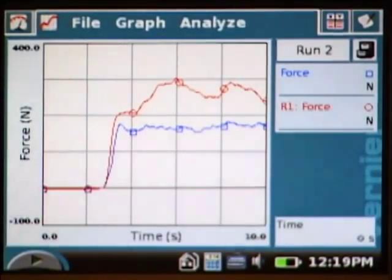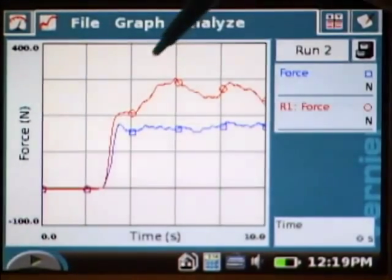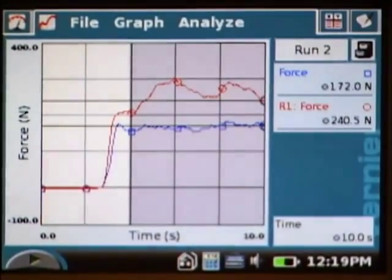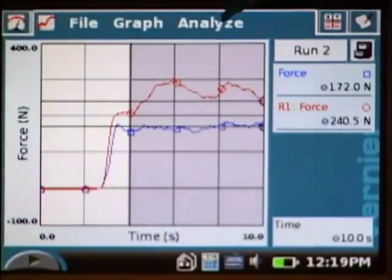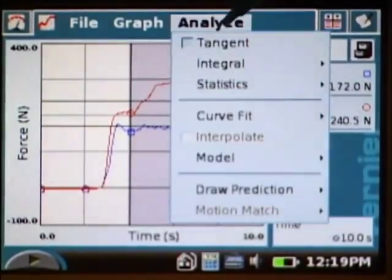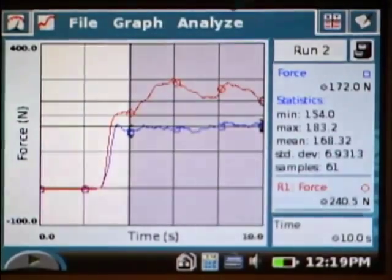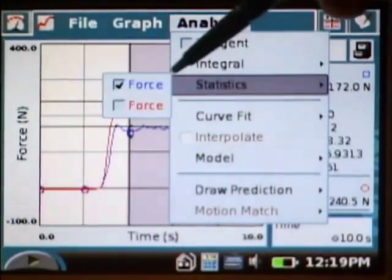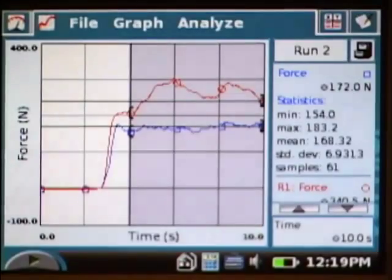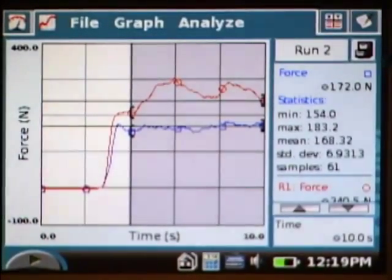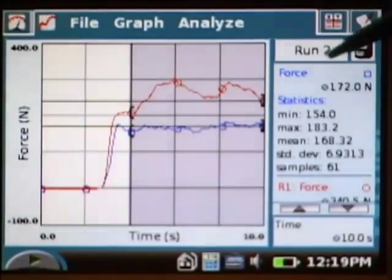To put a finer point on the analysis, I can select the region of the screen when I was squeezing the sensor, go into the analyze menu, and choose statistics. I want to select both my second run and my first run. Over at the right, I've got a readout of the min, the max, the mean, the standard deviation, and the total number of samples for each of those two runs.